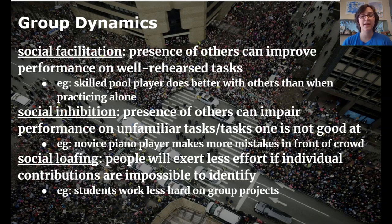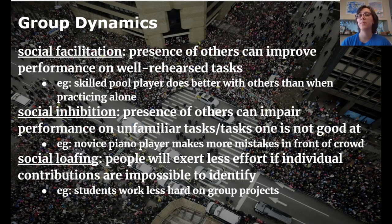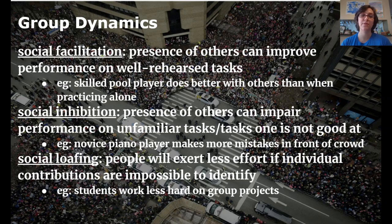Next: social facilitation, inhibition, and loafing — these are all related. Social facilitation is what happens when the presence of other people facilitates or improves your performance. If you're really good at something, doing it in front of an audience puts you on edge and makes you perform better. But social inhibition is its opposite: if you're new at something and the task is already hard, the extra pressure from the crowd makes your performance suffer. This has to do with arousal theory.